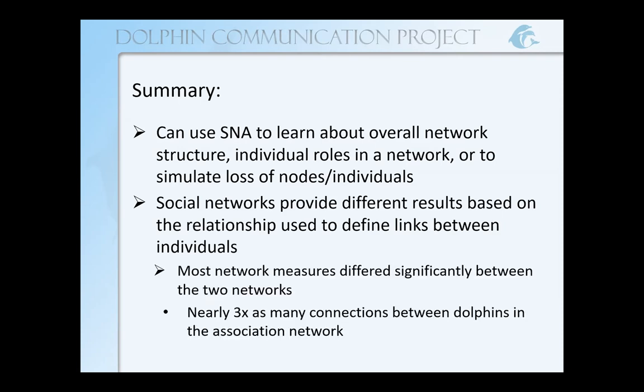In our two networks, we saw that most network measures differed significantly between the two, and we had nearly three times as many connections between dolphins when looking at associations versus interactions. This suggests that caution should be taken when interpreting social behavior from association networks. We should also be very careful when comparing networks — a lot of delphinid studies will use association as their measure and then compare to primate studies that use interaction. When we're uncovering differences between species, these differences might not actually be as significant as we think. If we instead looked at interactions between dolphins and compared to interactions between primates, perhaps we would find more similarities.